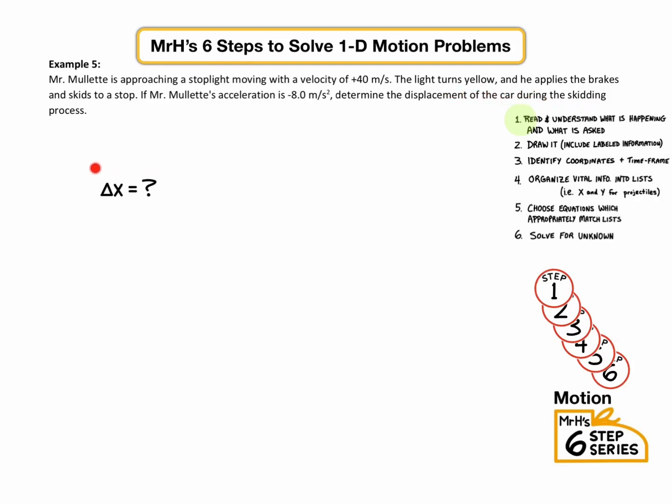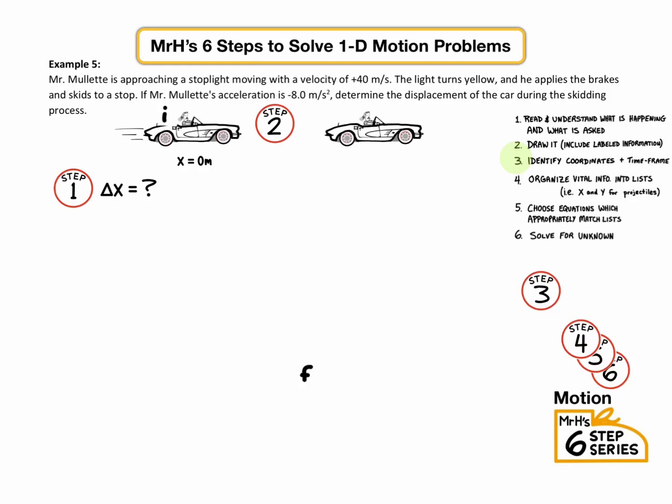All right, let's tackle another car problem. This one's a little bit different. It says this car is approaching a stoplight at 40 meters per second. Then they apply the brakes and come to a stop. Their acceleration was given as negative 8 meters per second squared. And they want to know what's the displacement of the car during the skid. So step one, identify the question with a symbol and a question mark. Displacement is delta X equals question mark. Step two, draw a picture. So we have a car that used to be moving and then the car came to a stop. Step three, establish coordinates and time frame.